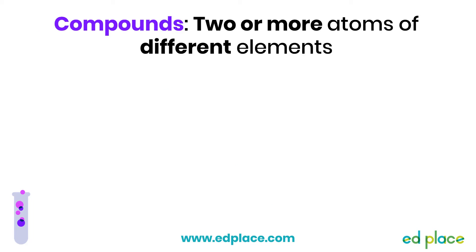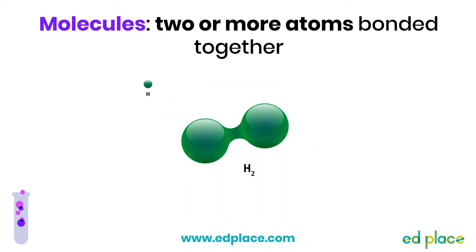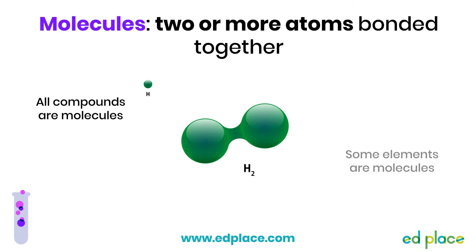A compound is a substance made up of two or more atoms of different elements, chemically joined or bonded together. For example, carbon dioxide gas, CO2, consists of one carbon atom and two oxygen atoms bonded together. A molecule describes two or more atoms bonded together. All compounds are molecules, and some elements are too. The atoms of some elements, like neon, do not join together and instead exist on their own as individual atoms — these are not molecules.